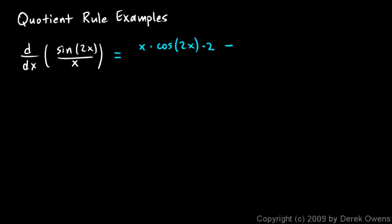So that's low d high minus high, which is sine 2x, times the derivative of the one down low there. And the derivative of x is just 1. And all of that is over x squared. And that's it.